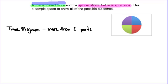For one of the coin tosses we have heads or tails. For the second coin toss we also have heads or tails. And for the spinner we have 4 different outcomes: purple, blue, green, and red. Remember that the key to this is that all of the outcomes for each of these parts to the event are equally likely.